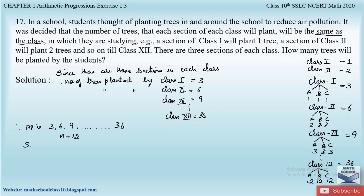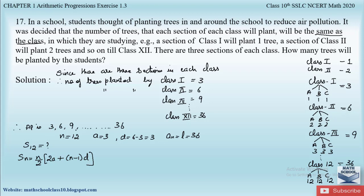We have to find the sum of trees planted by the 12 classes. From the AP we can find the first term a = 3 and the common difference d = 6 − 3 = 3. We also know the last term; the nth term or last term is equal to 36. If you don't know the last term you can use the formula Sn = n/2 × (2a + (n−1)d). If you have found out the nth term you can use the formula Sn = n/2 × (a + l).